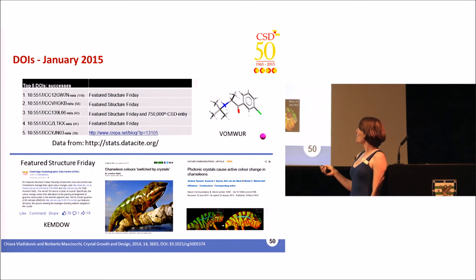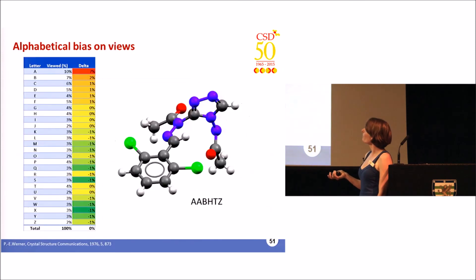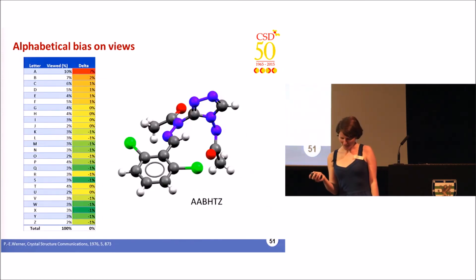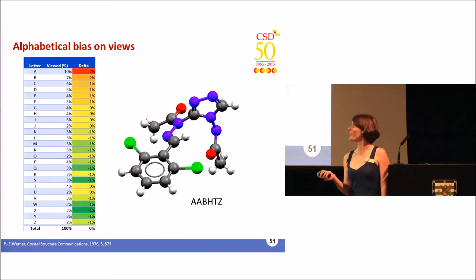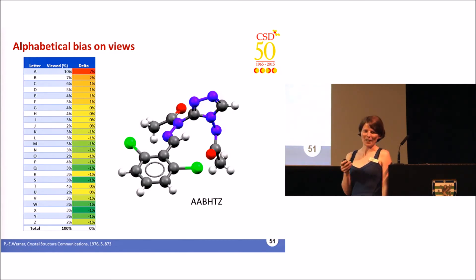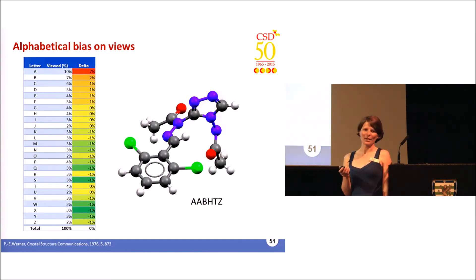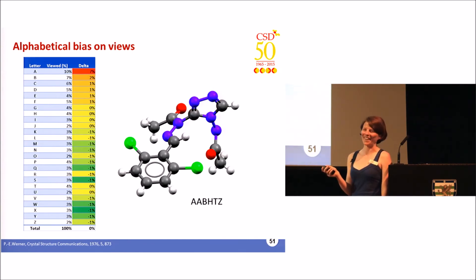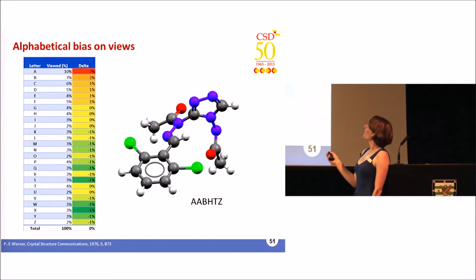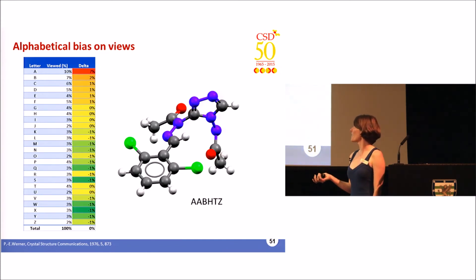The fifth most-used DOI is from a blog by Henry Rzepa, who I think is joining us during the week. One of the most viewed structures from Feature Structure Friday is a chameleon structure — I think it's just because everyone likes a chameleon, and it was also picked up by the BBC. With so many structures in the database, not everyone can look at all of them. When you look through the database, structures are ordered by ref code by default, and the most viewed structures tend to start with 'A' — your attention span starts to decrease after that. One of the most viewed structures ever is the first structure in the database, which Ian mentioned earlier.